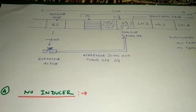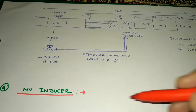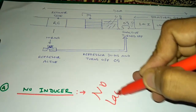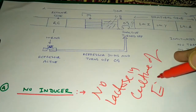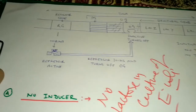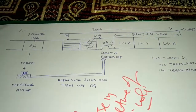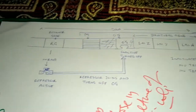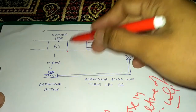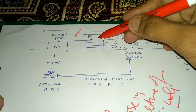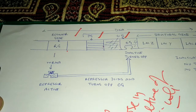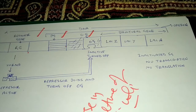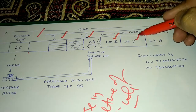Here is the overview of the whole process. In the first condition, when there is no inducer — no lactose in the culture of E. coli — this is the operon, a DNA segment containing the genes in E. coli. You can see the RG, the regulator gene; PG, the promoter gene; OG, the operator gene; and SG, the structural gene. The three structural genes are named lacZ, lacY, and lacA.